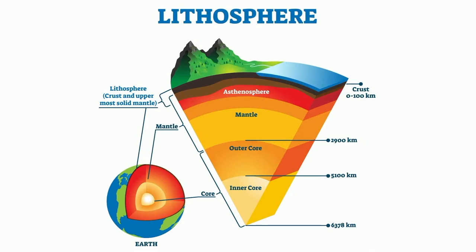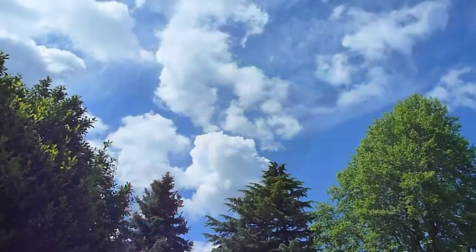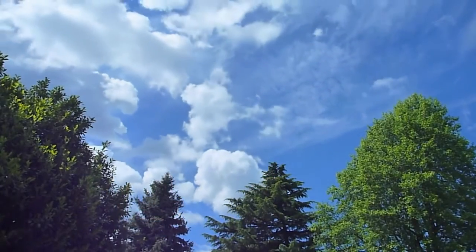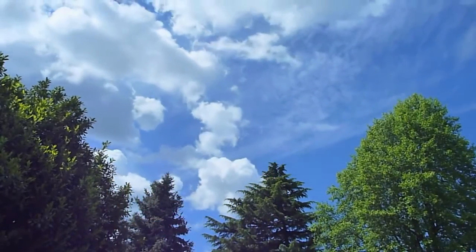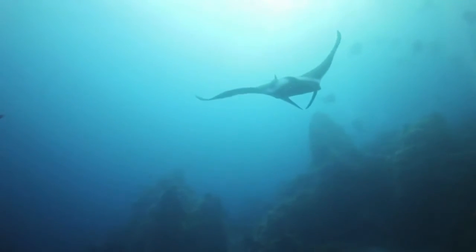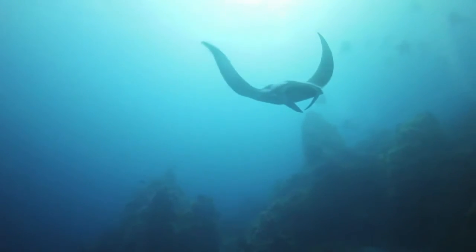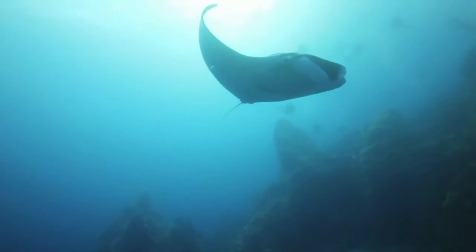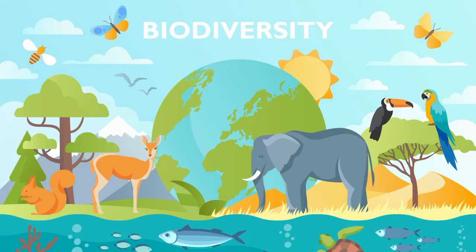Silicate and oxide minerals of the crust and mantle make up large portions of the lithosphere and contain oxygen. The atmosphere is made up of roughly 21% oxygen. The hydrosphere, which is the water on Earth, is 33% oxygen by volume. The biosphere, which is the sum of all ecosystems, is 22% oxygen and is found mainly in organic molecules.